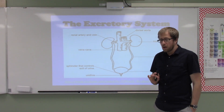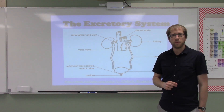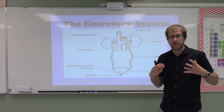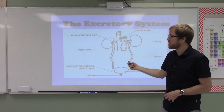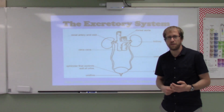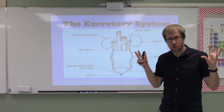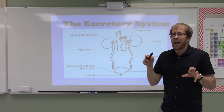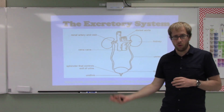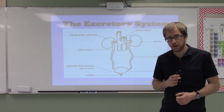Hello class. Today we are talking about the excretory system. The main components of your excretory system are going to be your kidneys and the associated organs — your ureters, bladder, and the different blood vessels that supply your kidney. We're going to look at all of those things in excruciating detail. However, today we are going to focus on some of those other organ systems we've talked about already that also have an excretory function.